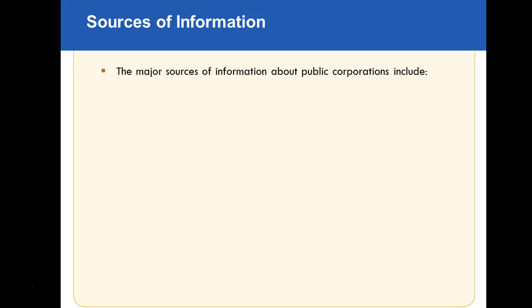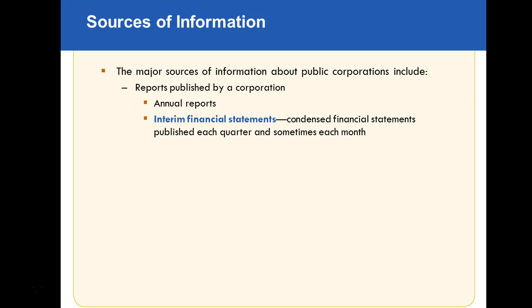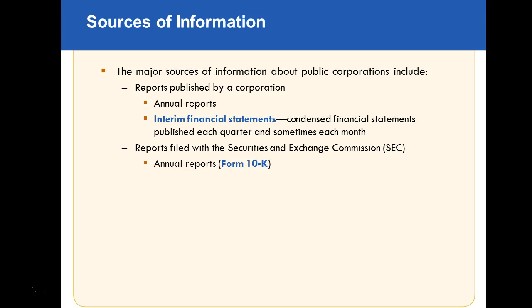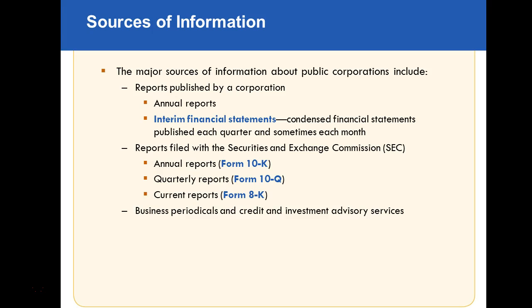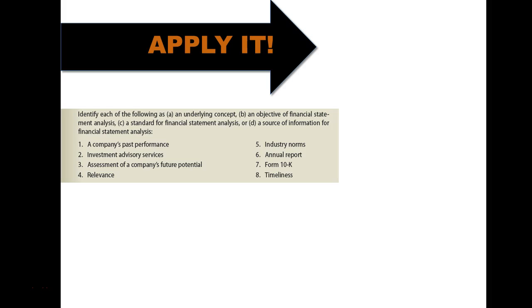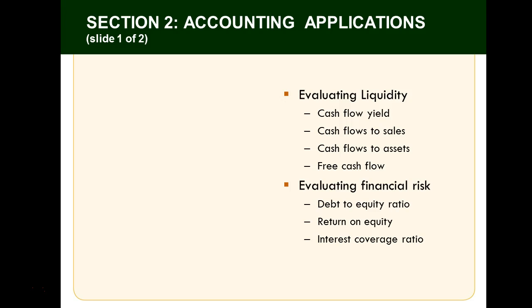Sources of information about public companies come from reports the corporation publishes: annual reports, interim or quarterly financial statements, and reports filed with the SEC — the Securities and Exchange Commission. The annual SEC report is called a 10-K, the quarterly is a 10-Q, and current reports are 8-Ks. Investment companies like Wall Street analysts and Moody's also provide their own editorial commentary about companies.